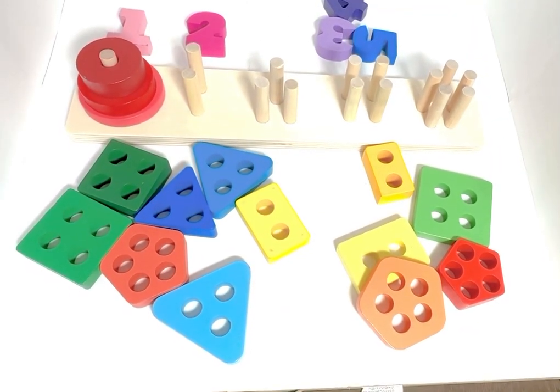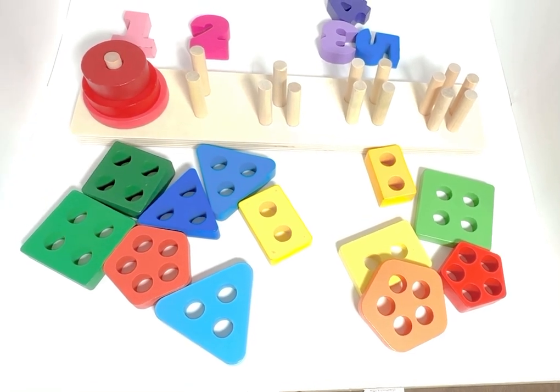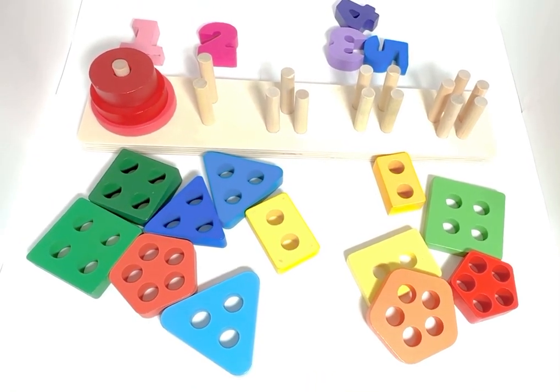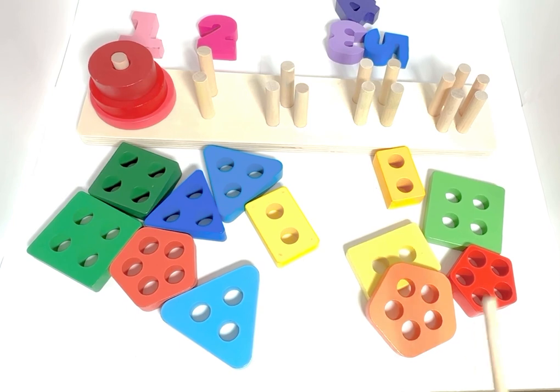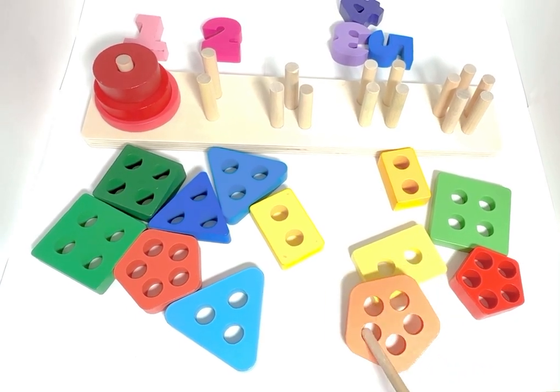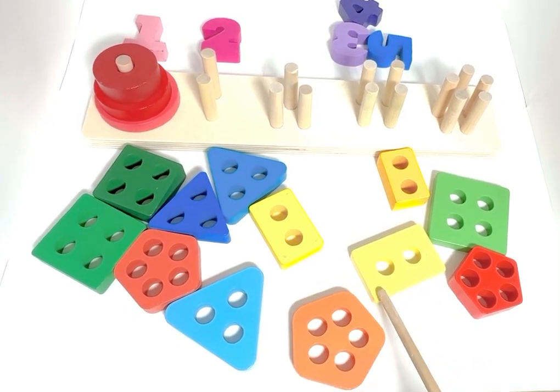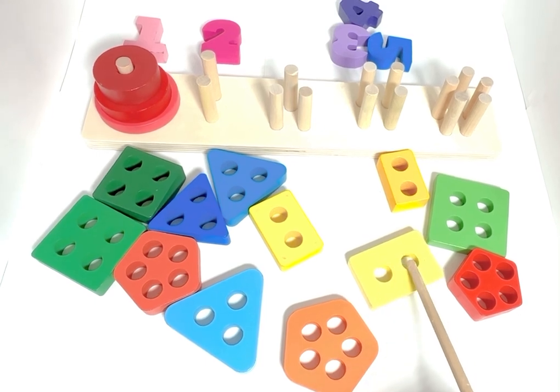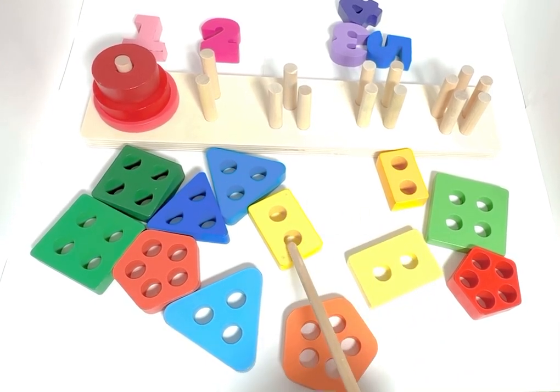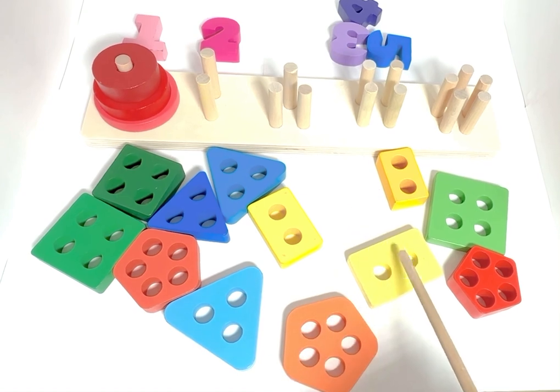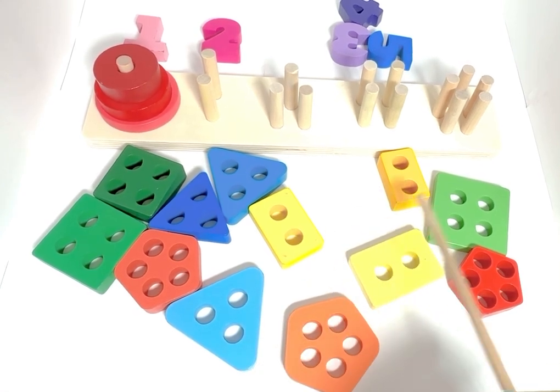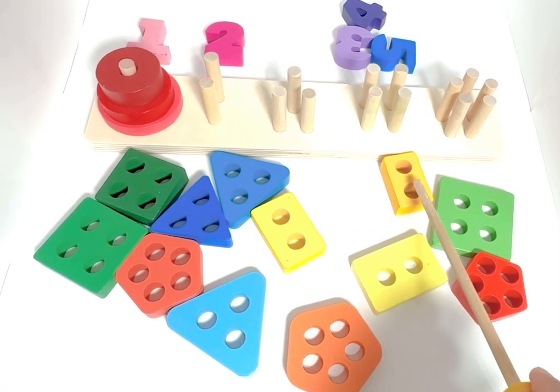Okay, can we see which shape over here has two holes? This one. This one. It has two holes. One, two. One, two. Yellow rectangle has two holes. One, two.